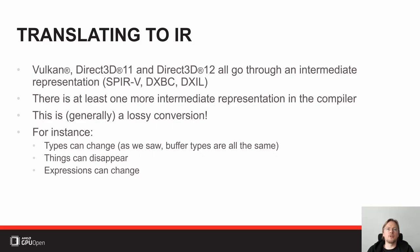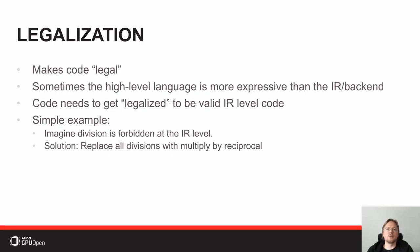There are actually things which have to change along the way, and those are called legalization. Legalization is the part where you make code legal in the sense that you can express something in the high-level language which you may not be able to express in the intermediate representation. A very simple example is division — the intermediate representations for GPUs usually don't have a division operation because GPUs don't have hardware division. Instead, a GPU has something called the reciprocal operation, which returns the result of one over something.